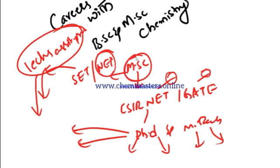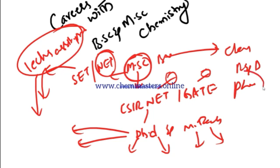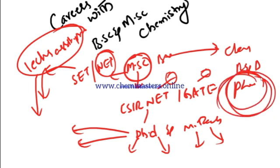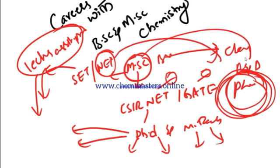And also with MSc and BSc qualification, one can recruit as a chemist in R&D and pharmaceutical industries. We have best scope of opportunities as a private sector in pharmaceutical industries with BSc and MSc chemistry qualifications.